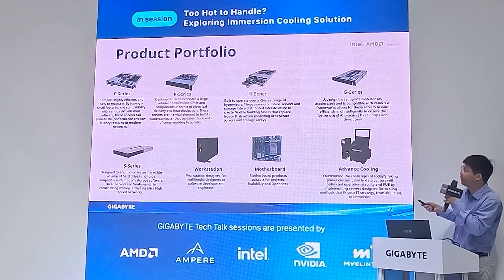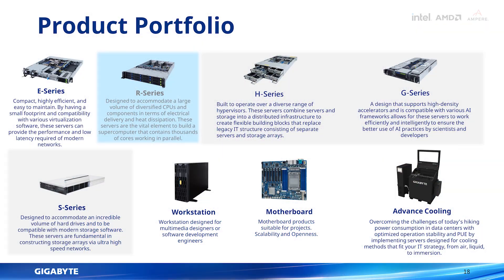Here is our product portfolio. By Intel, Ampere, and AMD, we have multiple series. The E series features short-depth chassis with GPU combinations. The R series is general-purpose server with lower power. The H series is high-density — 2U4N, 2U3N, or 2U2N. The G series is our GPU server: 1U with 4 to 6 GPUs, and 2U with 8 GPUs — exclusive in the market. The S series is for storage purposes. We also have workstations and multiple other products.